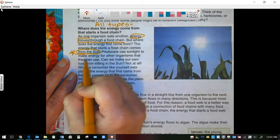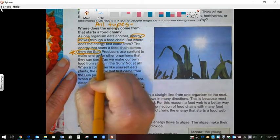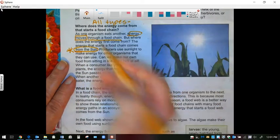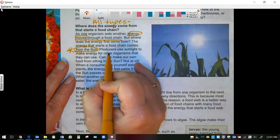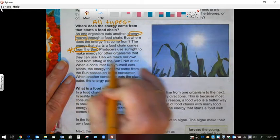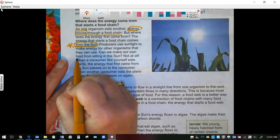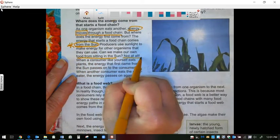Producers use sunlight to make energy. If we don't have a sun, then the plants won't grow. And then animals won't have anything to eat. Can we make our own food from sitting in the sun? No, not at all.